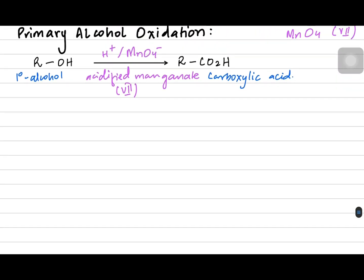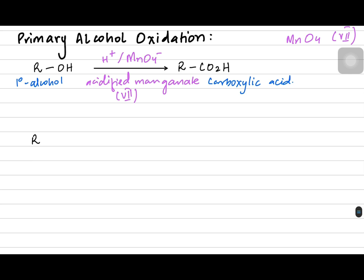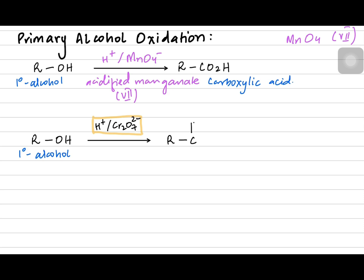Things become interesting when we are using a slightly weaker oxidizing agent. A slightly weaker oxidizing agent performs the reaction in two steps. Starting with the primary alcohol, when we use a weaker oxidizing agent — in our case acidified dichromate — it can produce an aldehyde in step one. An aldehyde has a carbonyl group on the corner, with H on the terminal and the carbonyl on the same terminal. If you continue the oxidation using the same acidified dichromate Cr₂O₇²⁻, you get carboxylic acid.